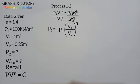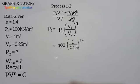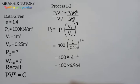Now inputting the parameters: P1 is 100, V1 is 1, V2 is 0.25, and n is 1.4. So P2 equals 100 times 1 divided by 0.25, which gives 4, then 4 to the power of 1.4. Punching the calculator, 4 to the power of 1.4 gives 6.964. So P2 equals 100 times 6.964, giving a final pressure P2 of 696.4 kilonewton per meter square.